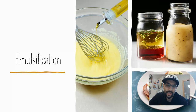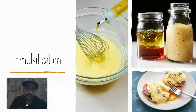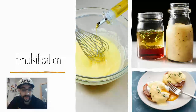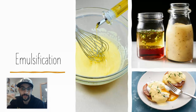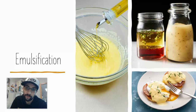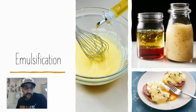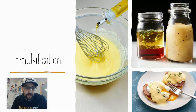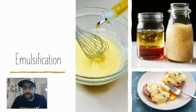Examples of emulsions: mayonnaise, and hollandaise sauce — like on Eggs Benedict, which is egg yolks, lemon juice, and butter. Those things don't mix unless you use proper technique. Vinaigrettes, as I showed, are another emulsion — oil and vinegar. Even butter is actually an emulsion, because it's milk fat and liquid and water. So when you heat up butter, it separates into the milk solids and the fat, because those components are held together as an emulsion.